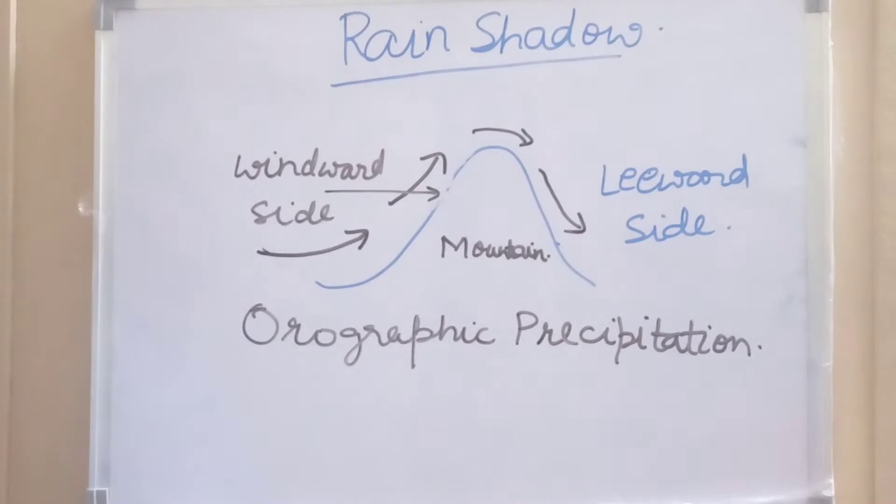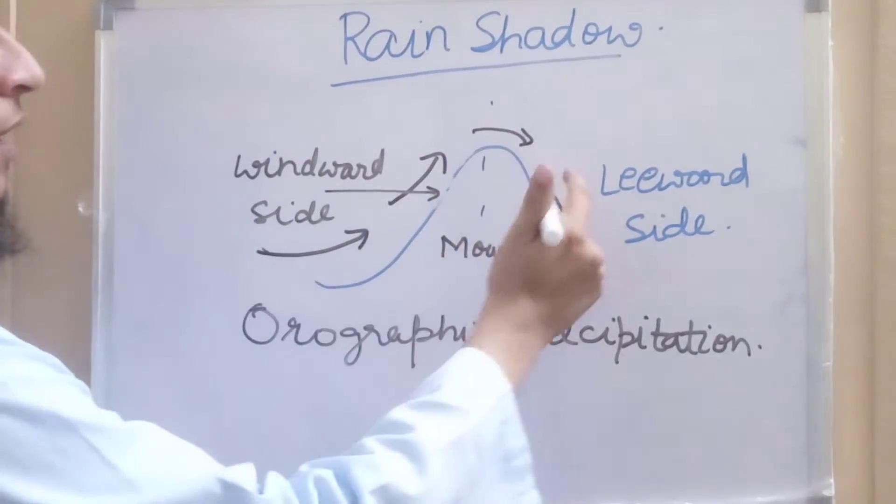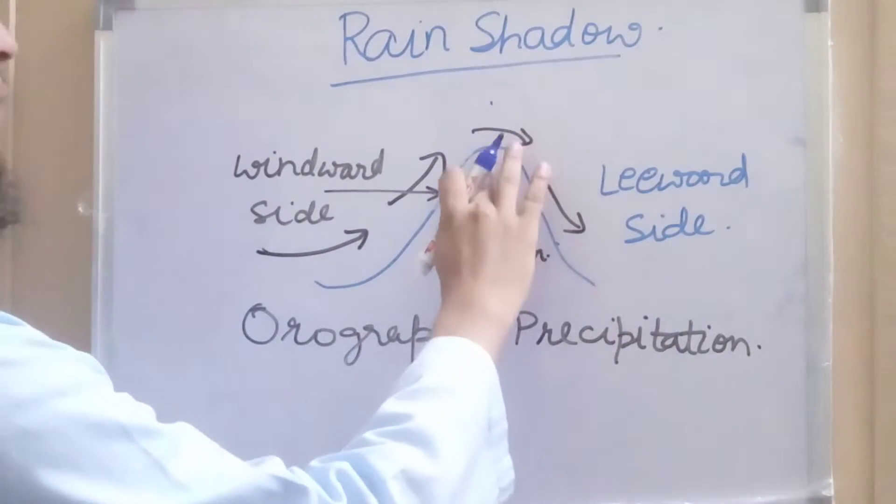Hello and welcome to my YouTube channel. In this video, we will be discussing rain shadow. What is rain shadow? Suppose there is a mountain. When the wind is flowing from this side, this side will be called the windward side of the mountain, and that will be called the leeward side of the mountain.